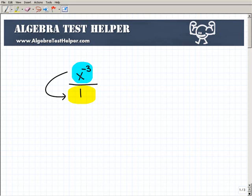All you have to do is pick up the power with the negative exponent and move it to the other side of the fraction bar. The negative exponent becomes positive. So x to the negative 3 equals 1 over x cubed. That's it.